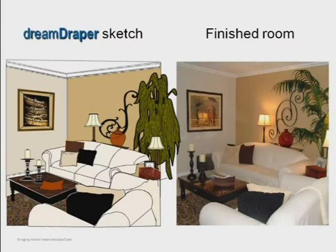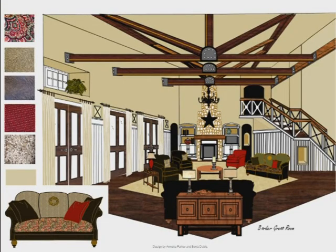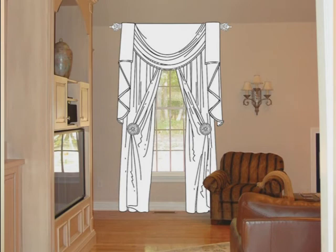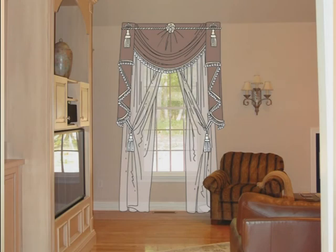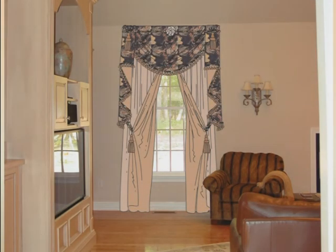Here's another example of the Dream Draper sketch on the left and the finished room on the right — you can hardly tell the difference. Create storyboards to show your client the room layout, selected furniture, wall color, and fabric samples. Design options are as easy as one, two, three. And this is the design that the client picked.